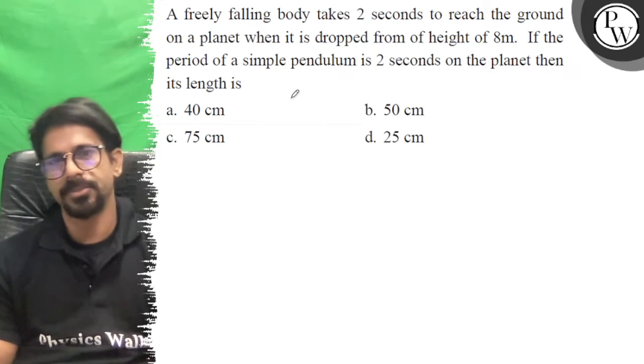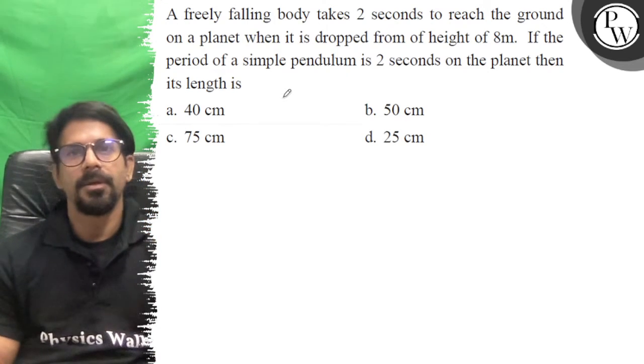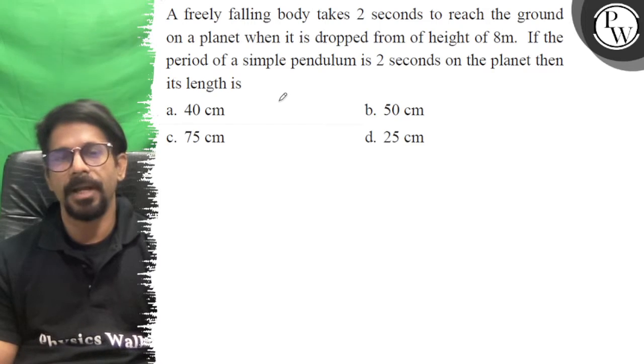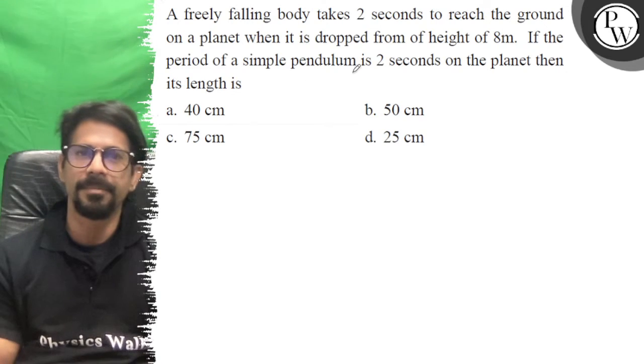Hello, let's see this question. A freely falling body takes 2 seconds to reach the ground on a planet when dropped from a height of 8 meters. If the period of a simple pendulum is 2 seconds on the planet, then its length is...